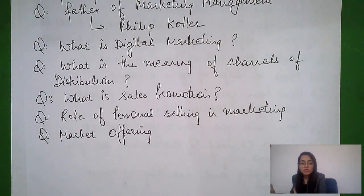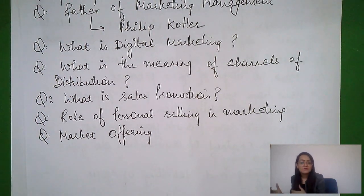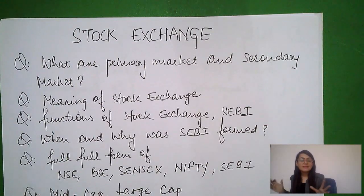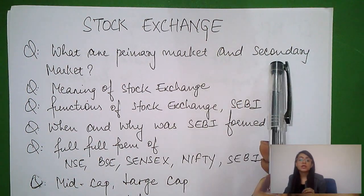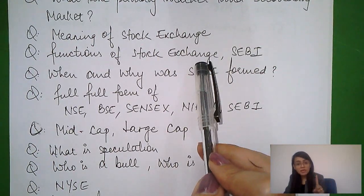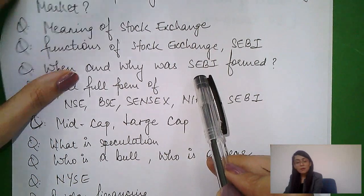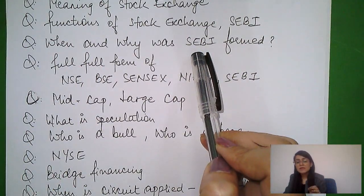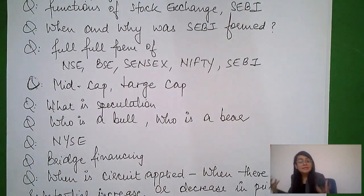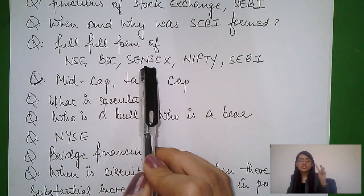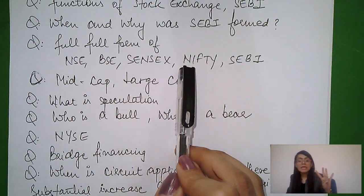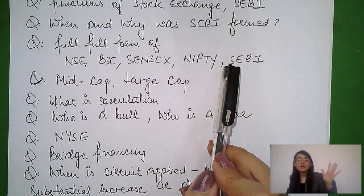Other important questions: what is the channel of distribution, what is sales promotion, what is personal selling, what is advertising, what is the market offering, what are the features and functions of marketing? If your project is on stock exchange: what is the primary market, what is the difference between the primary market (new issues) and secondary market (stock exchange), meaning of stock exchange, functions of stock exchange — very important — functions of SEBI — very important. Full form: SEBI is Securities Exchange Board of India; NSE is National Stock Exchange; BSE is Bombay Stock Exchange; SENSEX is Stock Exchange Sensitive Index; NIFTY is National Stock Exchange 50.